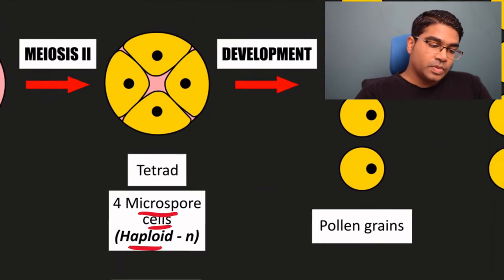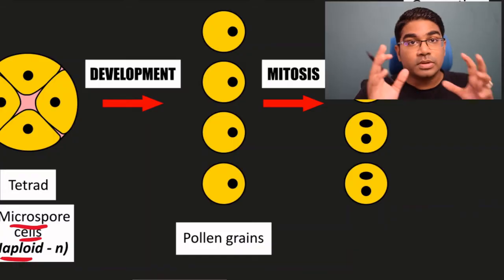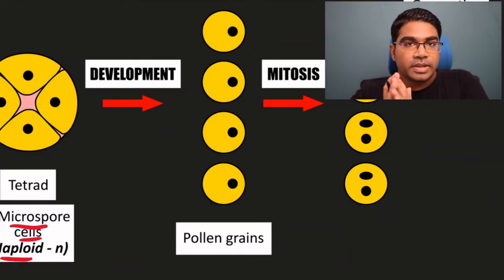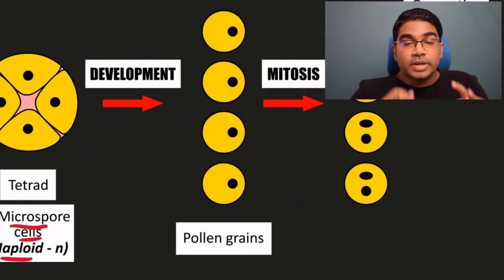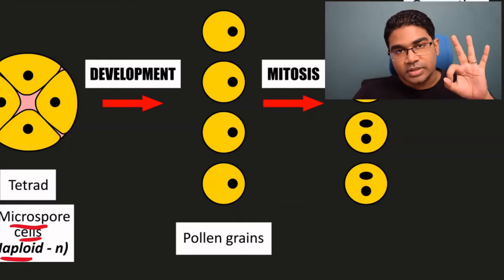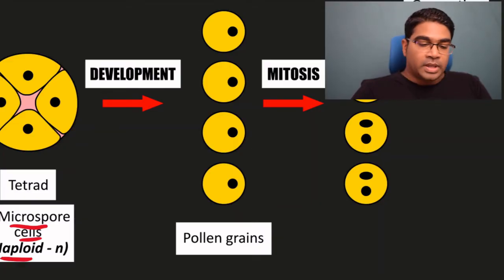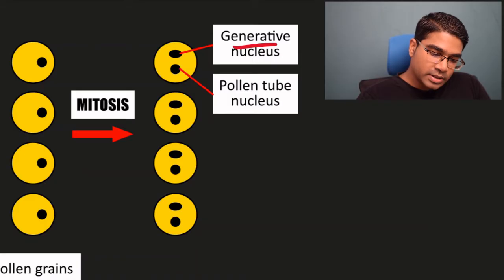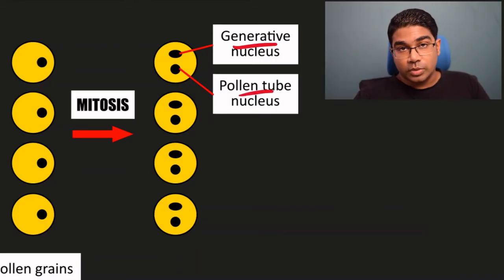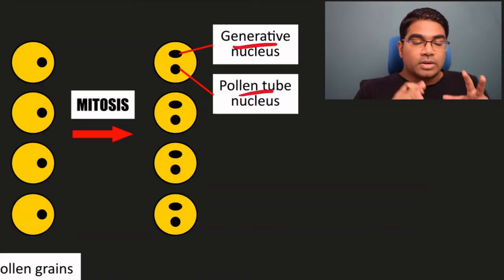This tetrad will eventually develop and split into four individual pollen grains. The process of the tetrad becoming pollen grains is just growth and development. In each pollen grain, the nucleus is going to undergo the third process, which is mitosis. The haploid nuclei are going to undergo mitosis to form two haploid nuclei in each pollen grain. These two haploid nuclei each have their own function: one is called the generative nucleus and the other is called the pollen tube nucleus, or simply the tube nucleus. We will look at the function of these two nuclei in more detail when we discuss double fertilization.